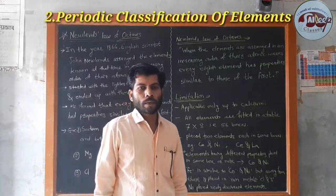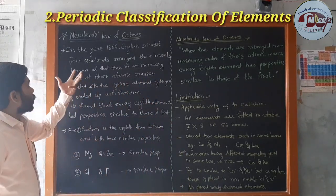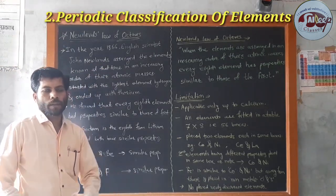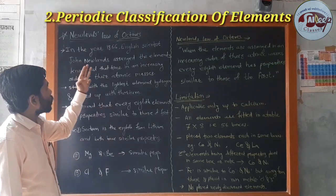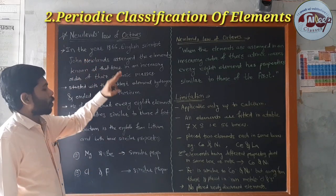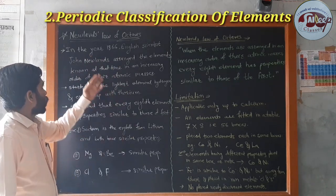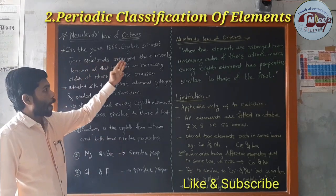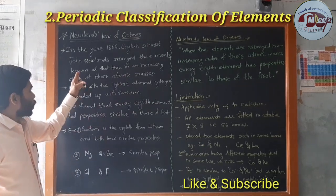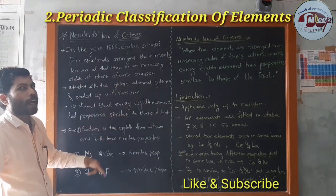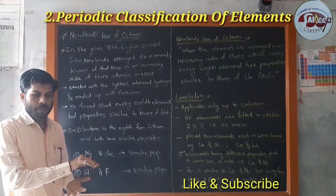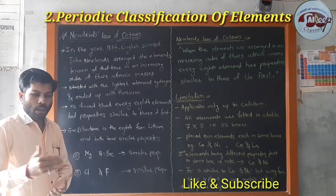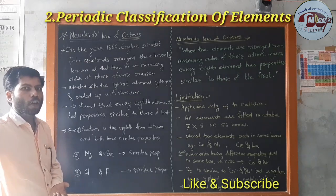The next point is Newlands' Law of Octaves. We saw the first scientist Dobereiner; now we see Newlands' Law of Octaves. In the year 1866, English scientist John Newlands aligned the elements known at that time in increasing order of their atomic masses.